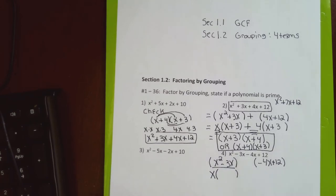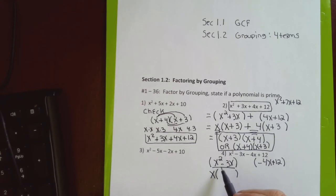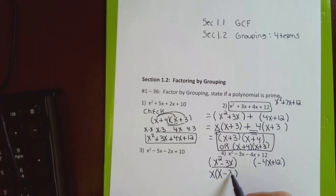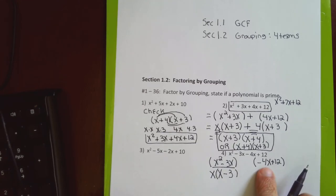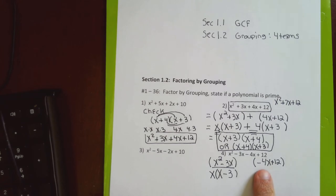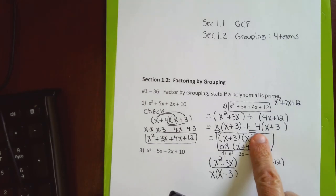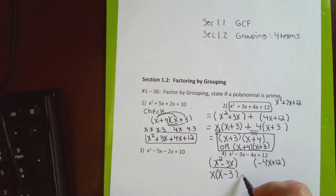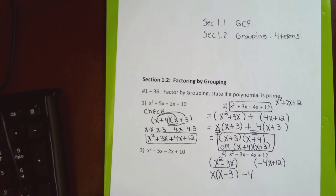From the first parenthesis I factor out an x — I don't get a numerical common factor because x² has a coefficient of 1. Factoring out an x: the first term had two x's, I take one away; the second term was 3x, I take the x away and am left with 3. Because the second parenthesis leads off with a negative, I find the opposite of the GCF and factor it out.